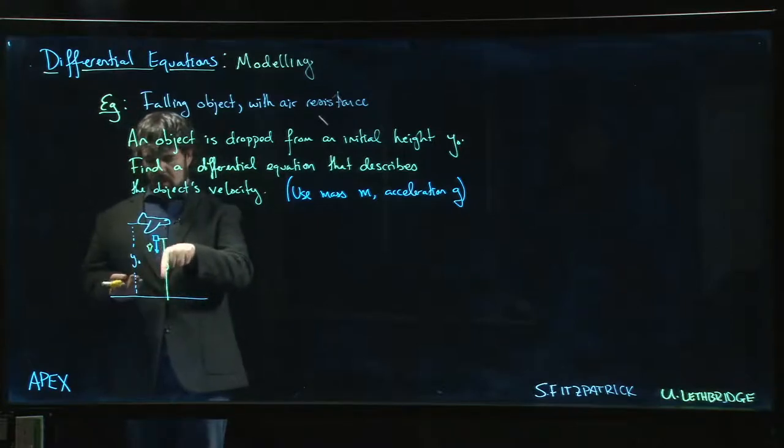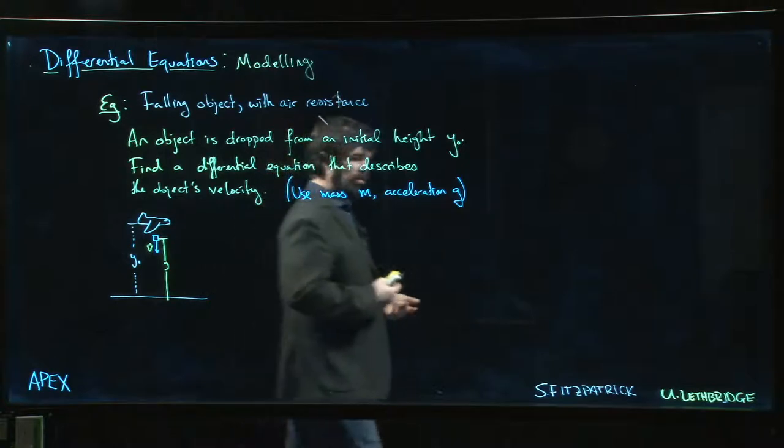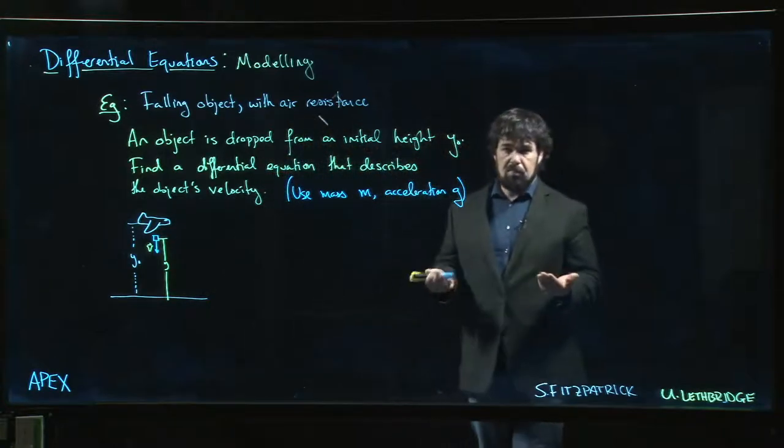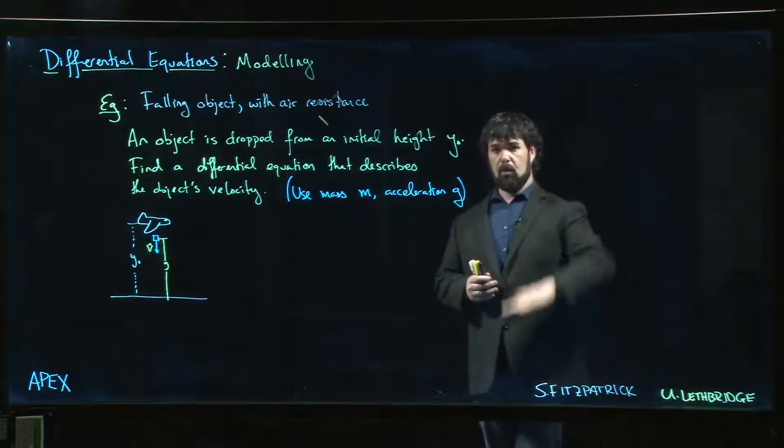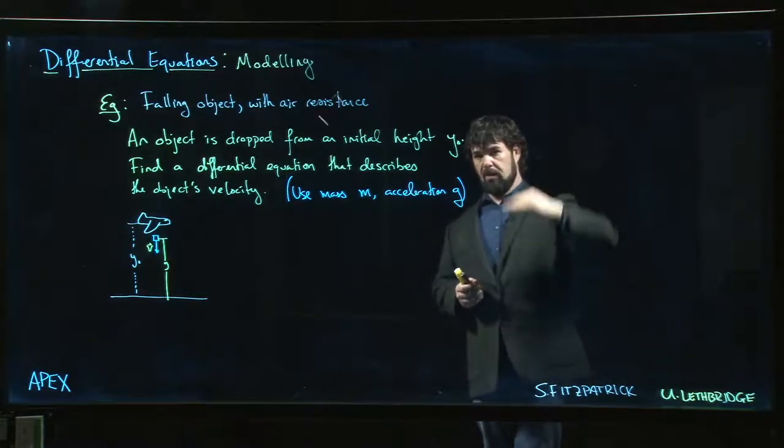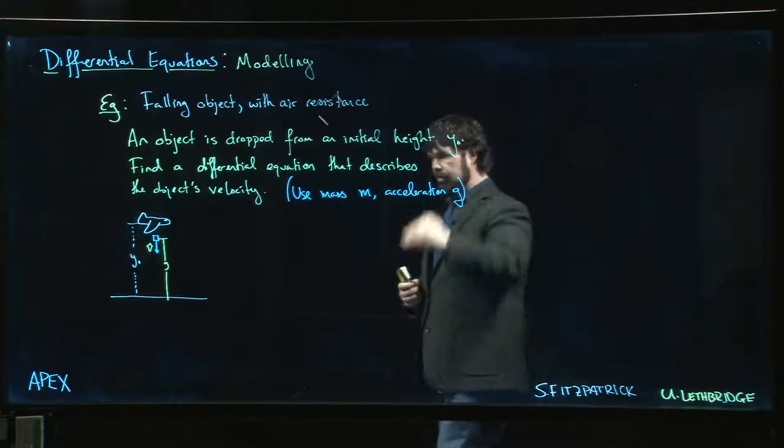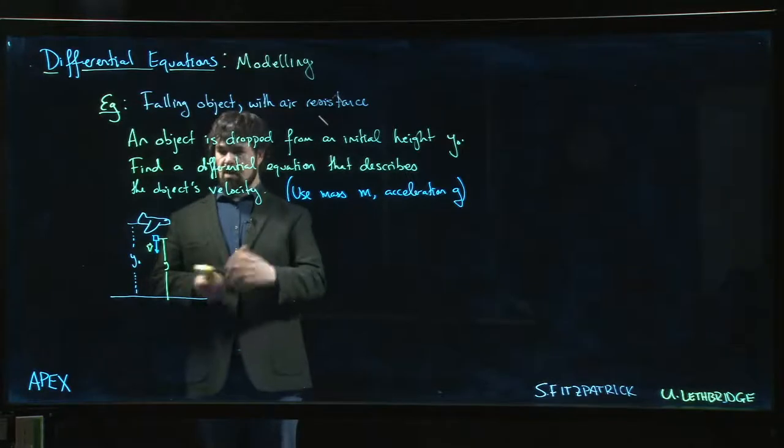Now I'm drawing that as a vector, maybe that's not appropriate, but we want to indicate the velocity is downward. It's a one-dimensional problem so we can use a negative sign to indicate downward trajectory versus upward, assuming we're measuring y from the ground up. Going up is increasing y.